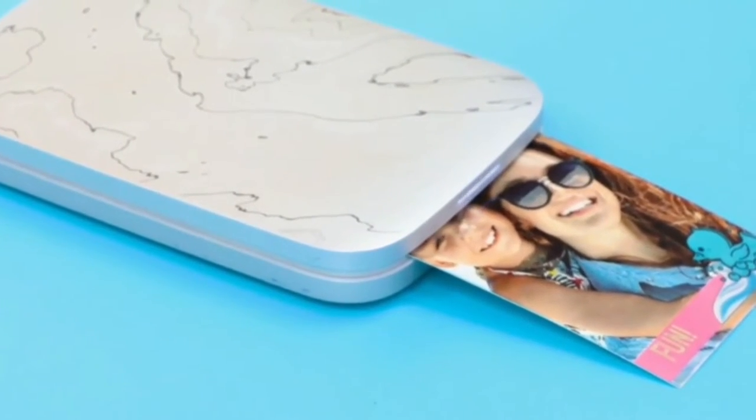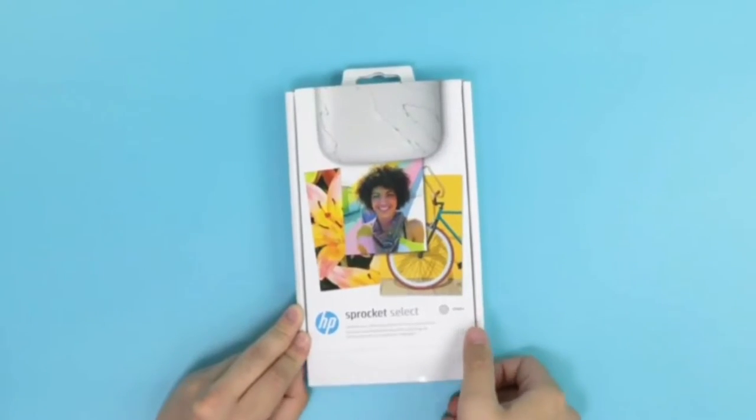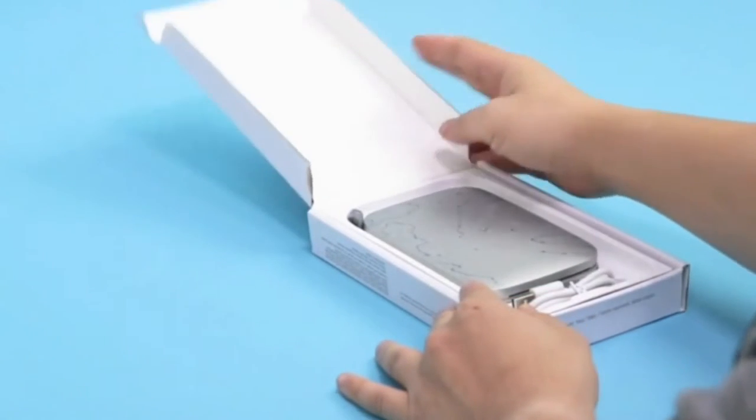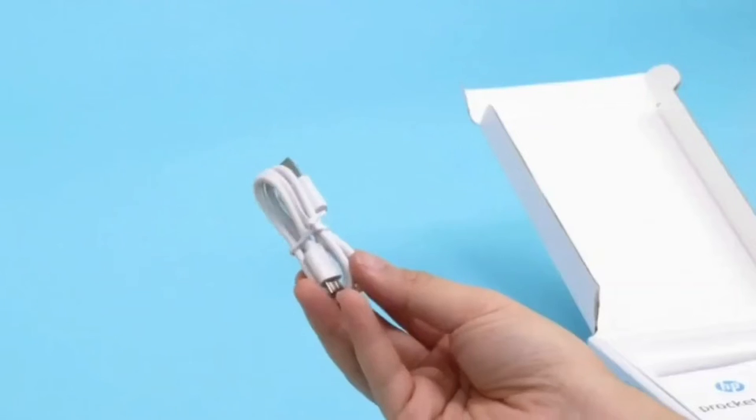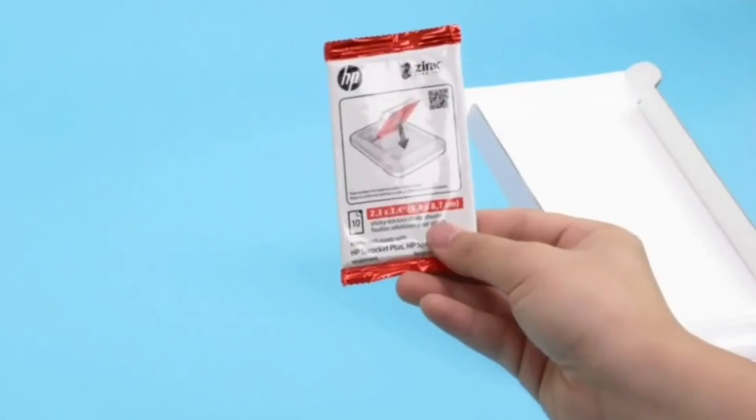Load the 10 sheets of HP Zinc 2.3 by 3.4 sticky backed paper into your portable picture printer and create smudge proof photos and stickers for journaling and your creative projects.